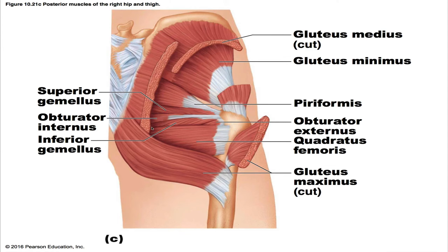The obturator internus surrounds the obturator foramen within the pelvis, leaves via the lesser sciatic notch, and turns acutely forward to insert into the femur. Its origin is the inner surface of the obturator membrane, the greater sciatic notch, and the margins of the obturator foramen; its insertion is the greater trochanter in front of the piriformis. Its action is the same as the piriformis, innervated by L5 and S1. The obturator externus is a flat triangular muscle deep in the superomedial aspect of the thigh. Its origin is the outer surface of the obturator membrane, the pubis and ischium, and the margins of the obturator foramen; its insertion is by a tendon into the trochanteric fossa of the posterior femur. Its actions are also the same as the piriformis, innervated by the obturator nerve.